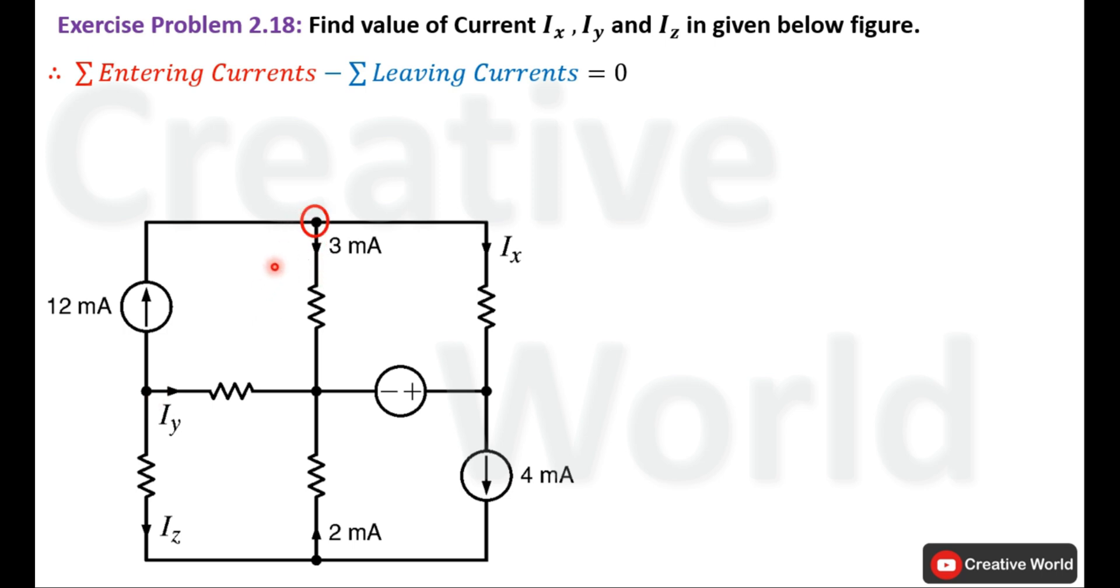Apply Kirchhoff's Current Law on this node. On this node, one current is entering, that is 12 mA, while two currents are leaving. One is 3 mA and the other one is labeled as Ix, and we are interested to calculate the value of Ix.